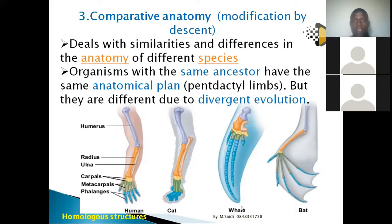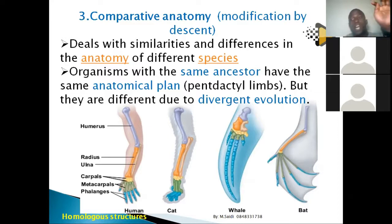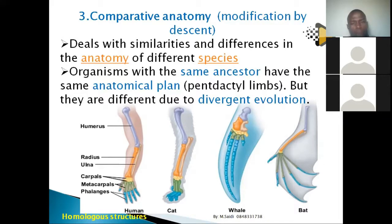A whale looks different on the outside, but if you examine its internal anatomy you find it also has five digits. A cow has five that are partially fused, and a chicken has five — three in front, one behind, and one higher up. All of this shows that these organisms share a line of ancestry.